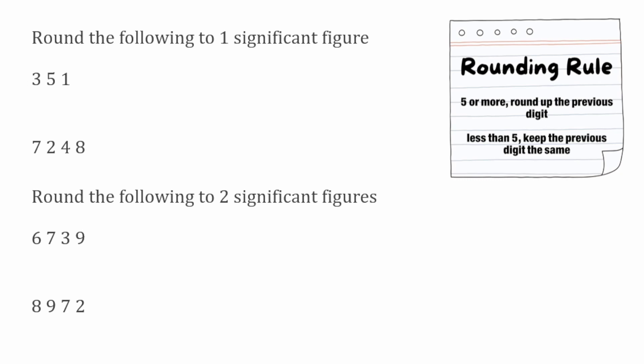In this first example of 351, the first significant figure would be the 3, as it's the first digit that isn't a zero. I'm going to put a line between that 3 and the next digit, which is a 5. Now we want to determine whether that 3 is going to stay as a 3 or round up to a 4, and we do that by looking at the digit on the right-hand side of the line, which is a 5. We follow our rounding rule: if that digit on the right is 5 or more, we round up; if it's less than 5, we keep the previous digit the same.